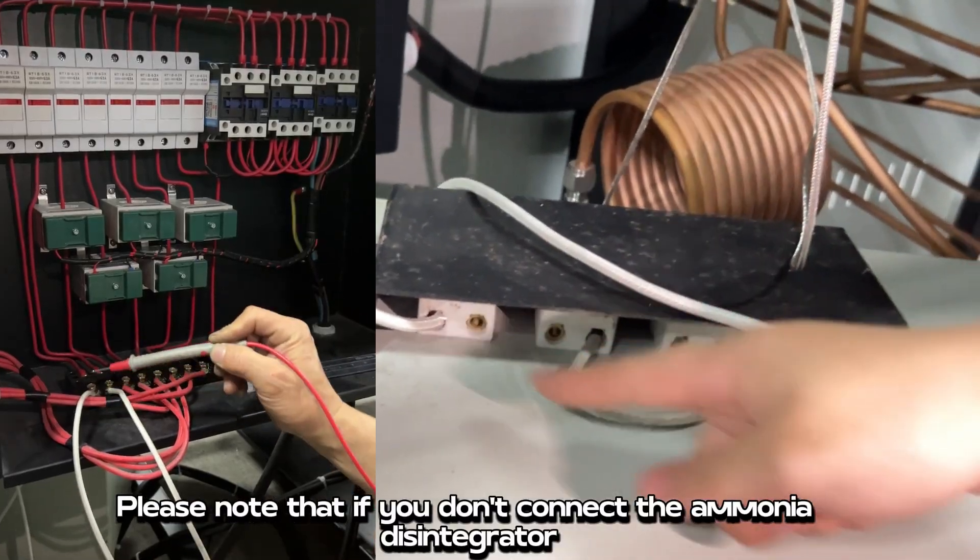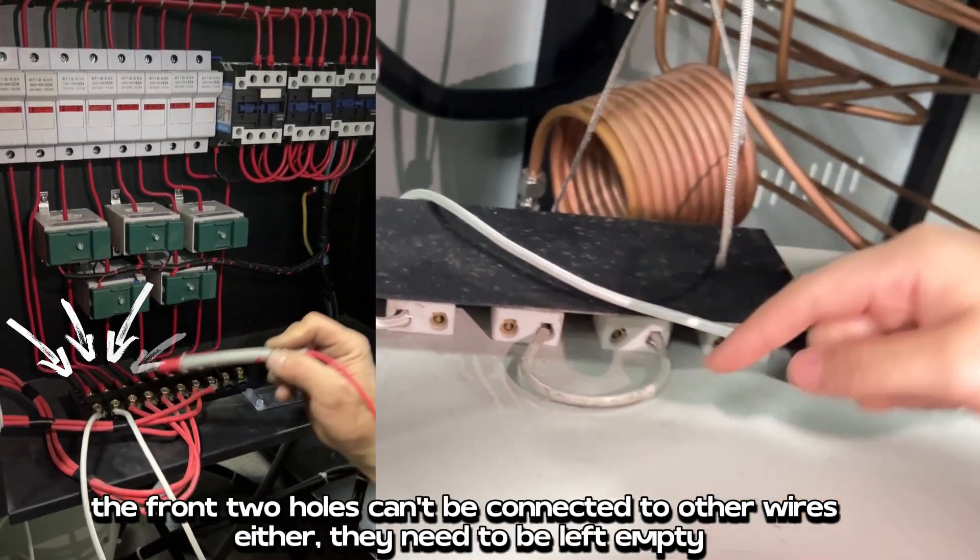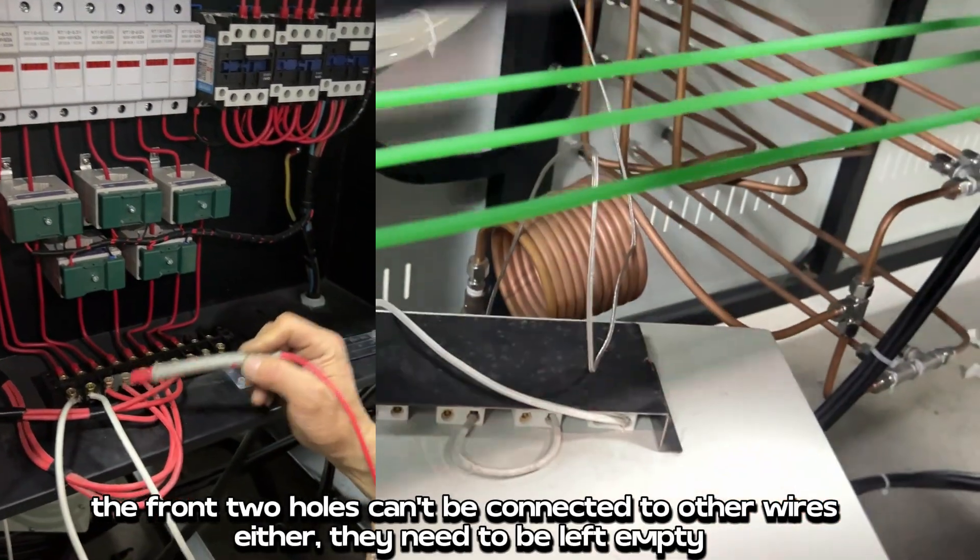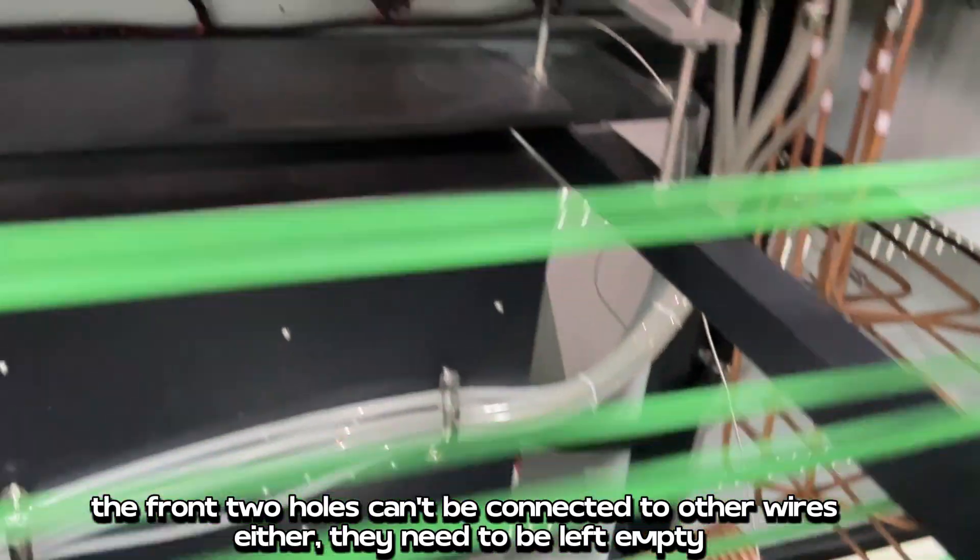Please note that if you don't connect the ammonia disintegrator, the front two holes can't be connected to other wires either. They need to be left empty.